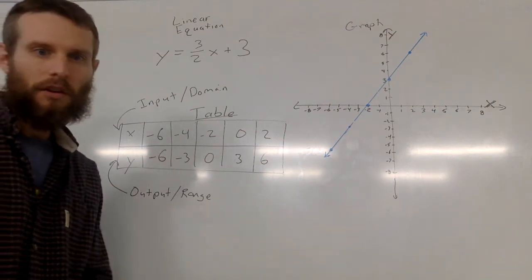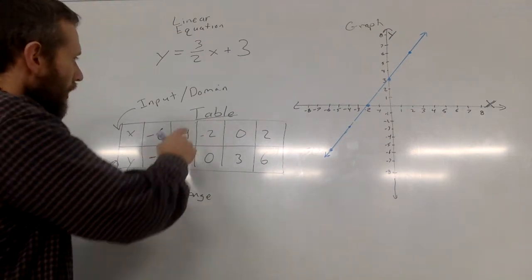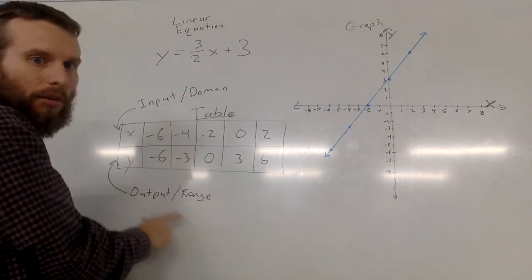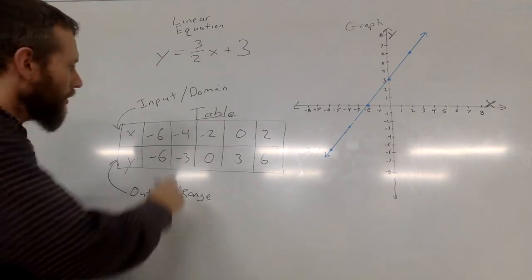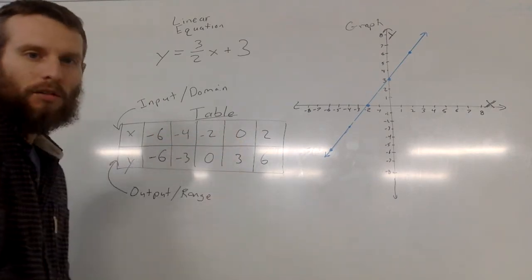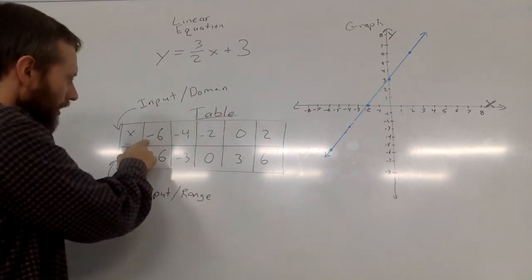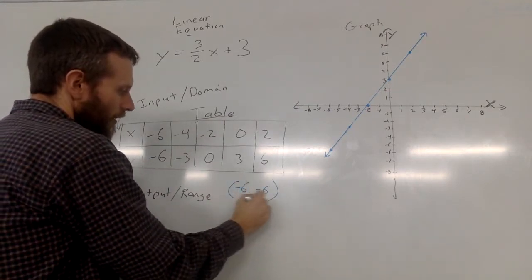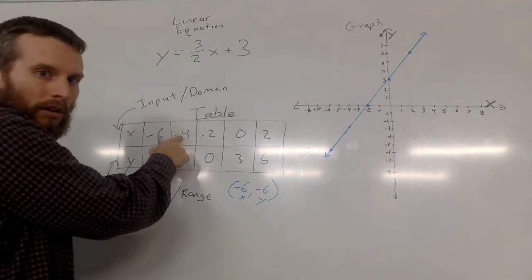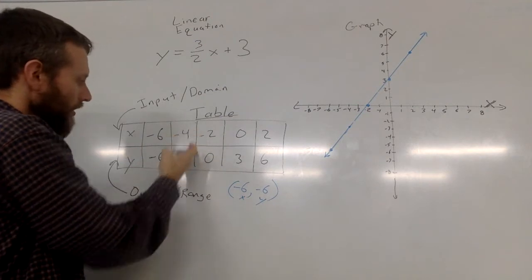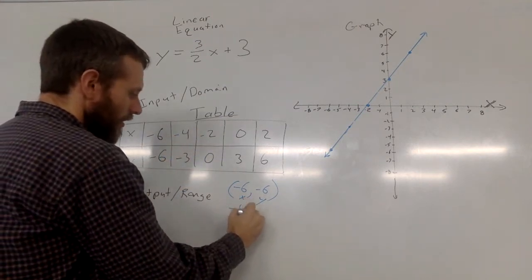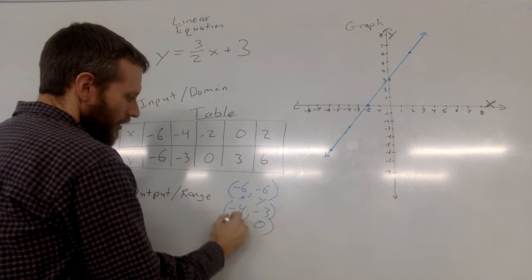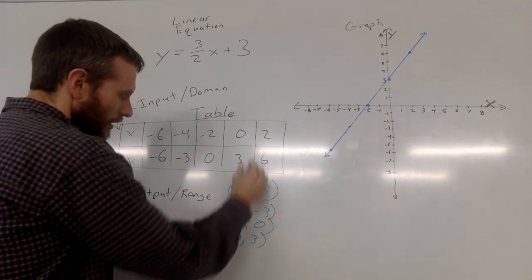Now, I want you to notice a few more things with me and this introduction here. This table, if you'll notice, the input or domain is made up of the x values. The output or range is made up of the y values. And all of these x and y values correspond to a point on the graph. So here x is negative 6, y is negative 6. You know that we put x, y first. Where x is negative 4, in other words, if I input negative 4 for x, out is going to come a negative 3. If I input a negative 2 for x, out is going to come a 0. And you can see the pattern that's happening here.